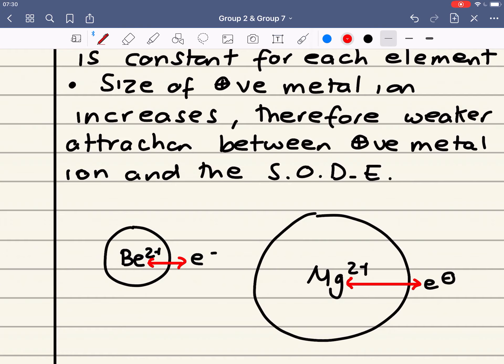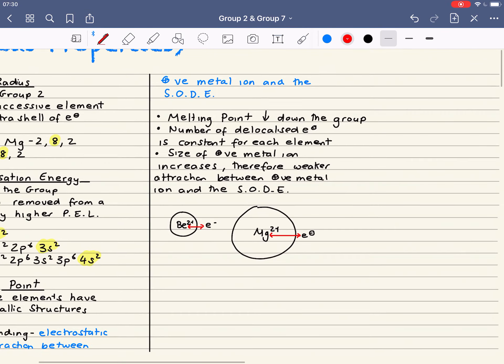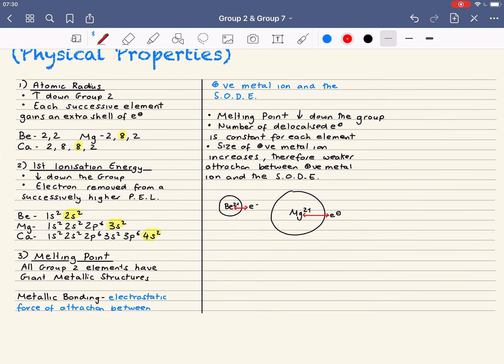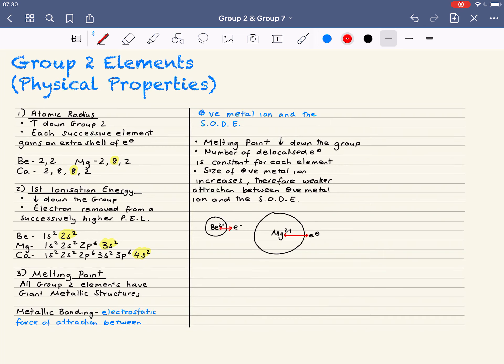Therefore, you've got a weaker attraction. Weaker attraction means bonds easier to break. Therefore, lower melting point. So, there are the three trends in physical properties. We state the trend. In each case, then, we've explained the trend.